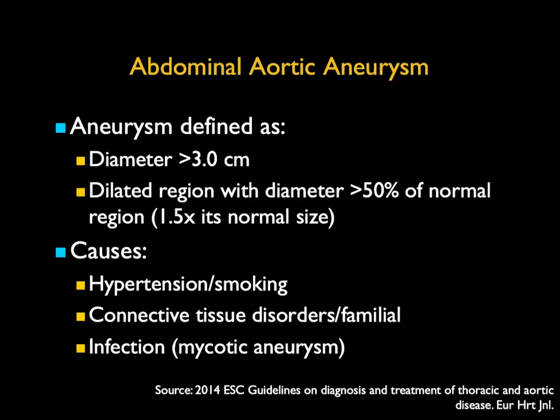Let's look at some definitions. What's an abdominal aortic aneurysm? Typically it's defined as a diameter over three centimeters, or a dilated region with a diameter greater than 50% of the normal region — so 1.5 times its nearest neighbor. There are many reasons for abdominal aortic aneurysms, including simply aging. They're more commonly seen in older patients, with increased incidence in patients with hypertension and patients who smoke.